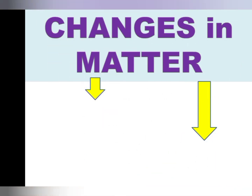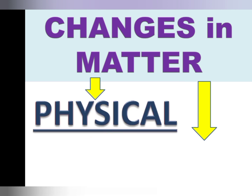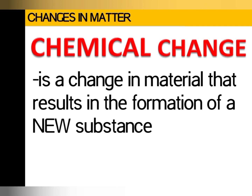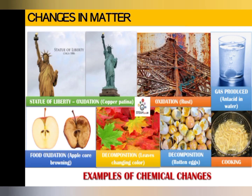We have studied that there are two changes in matter. Changes could be a physical change and a chemical change. When we say chemical change, it is a change in material that results in the formation of a new substance — there is a new substance being formed.